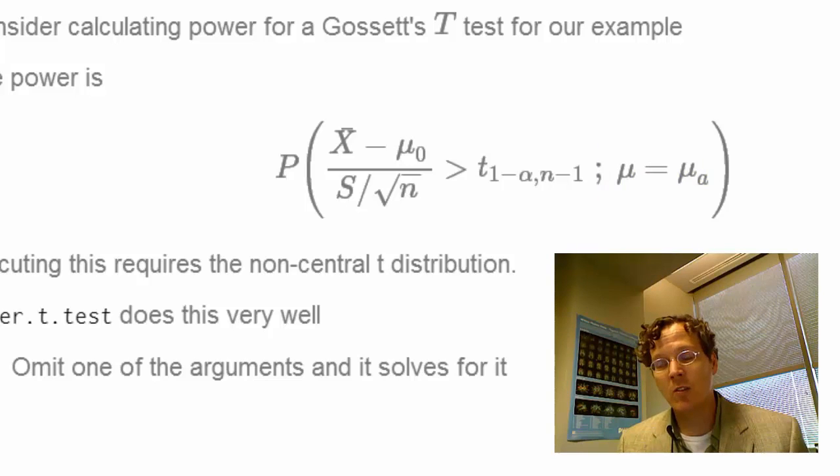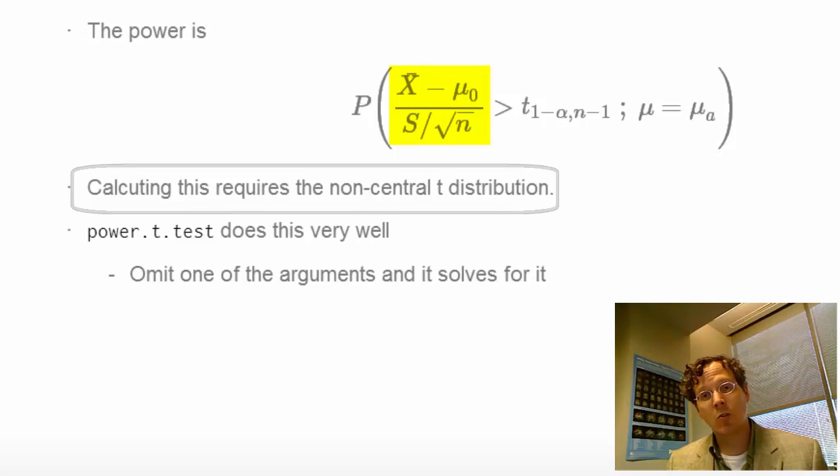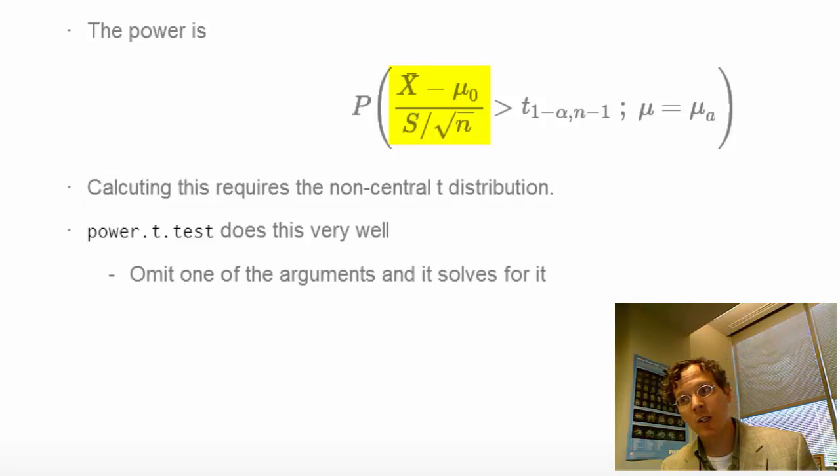It turns out that this statistic, x-bar minus mu-naught over the standard error, does not follow a t-distribution if the true mean is not mu-naught. If it's mu-a and mu-a is different from mu-naught, it doesn't follow a t-distribution. It follows something called the non-central t-distribution, which we're not going to cover.